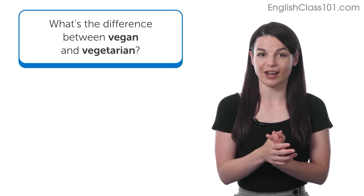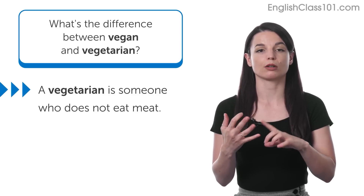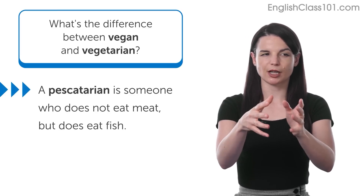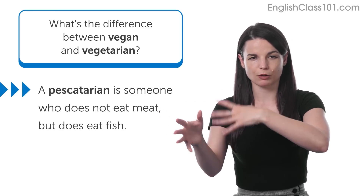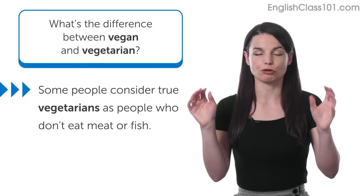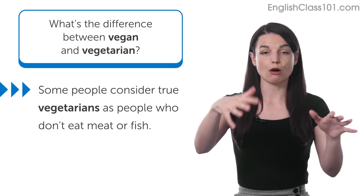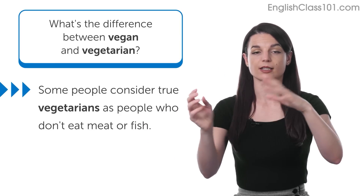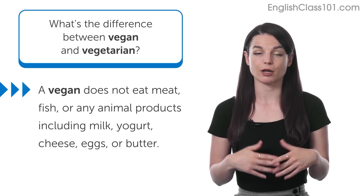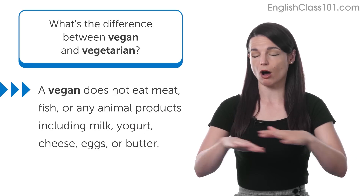Let's start with vegetarian. A vegetarian is a person that does not eat meat — so no pork, no chicken, no beef, nothing. Some people might say 'I'm a vegetarian but I eat some fish.' Those people are sometimes described as pescatarians. But true vegetarians are people who also do not eat fish — so no red meat, no fish. That is someone who is a vegetarian.